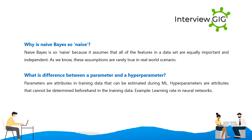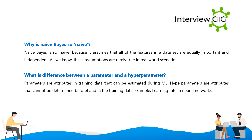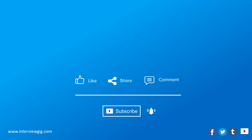What is the difference between a parameter and a hyperparameter? Parameters are attributes in training data that can be estimated during ML training. Hyperparameters are attributes that cannot be determined beforehand from the training data. An example of a hyperparameter is the learning rate in neural networks.